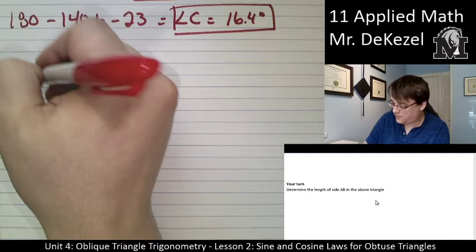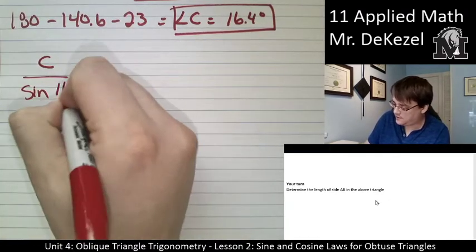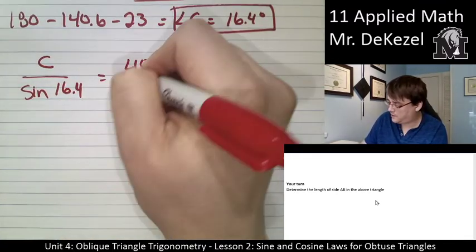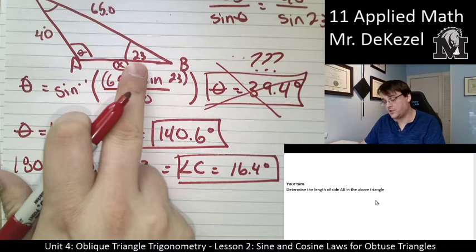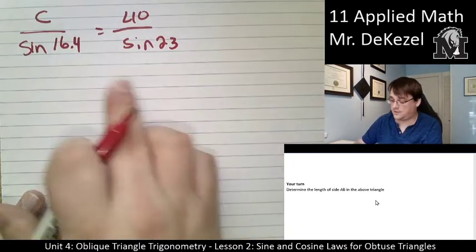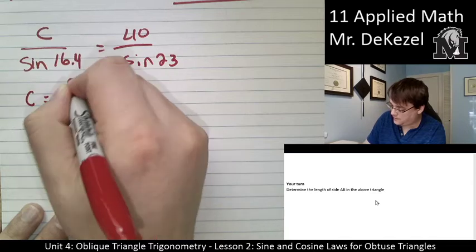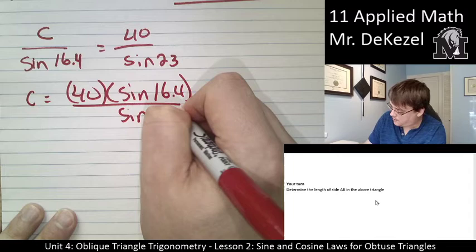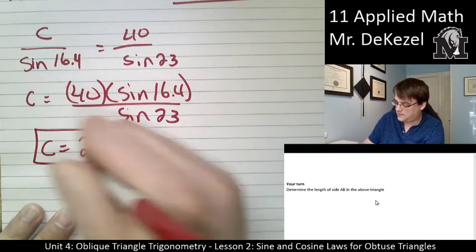Now I can use that in my ratio to find out what X is. So it's going to be side C, which I don't know, over the sine of angle C, which I just found to be 16.4, is equal to 40 over the sine of 23. And that is just, from my diagram, 40 and 23 are a side angle pair. I can rearrange by moving sine of 16.4 to the top. C is equal to 40 times the sine of 16.4 divided by the sine of 23. We find C to be 29 centimeters.